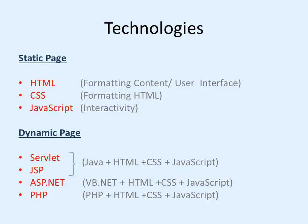For developing static pages, HTML is used for formatting the contents and developing the user interface — that is, the look and feel of a page. CSS is useful for enhancing or formatting HTML, giving a boost to HTML. And JavaScript is used for interactivity like pop-ups and pull-down menus — any interactivity required on the page is provided using JavaScript. These three things are must for developing any web page.